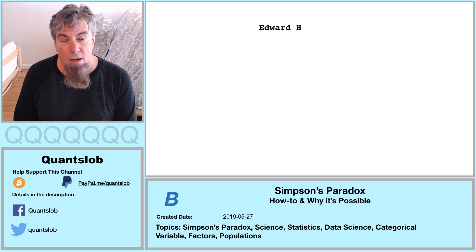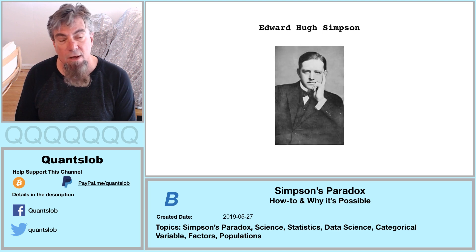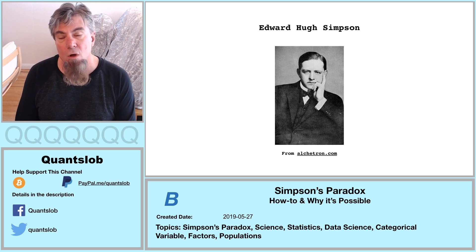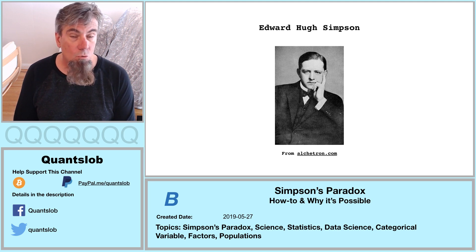Simpson's Paradox is named after Edward Hugh Simpson, who is otherwise known as having served as a British codebreaker or cryptanalyst during World War II. Not to be confused with Thomas Simpson, who was around about two centuries prior and who was known for his super cool Simpson's Rule or Simpson's Approximation.